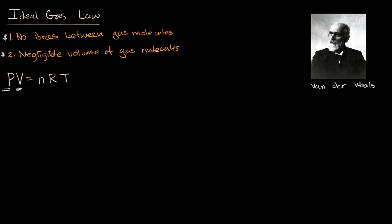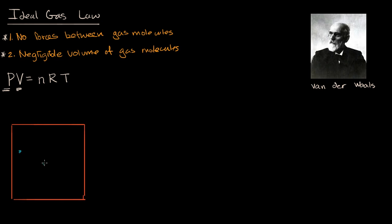To understand the logic of the van der Waals equation, let's think about how we might want to modify P, and then how we would want to modify V. Let's give ourselves a container and put some gas molecules in it. Pressure is force per unit area, and the pressure here comes from the collisions of gas molecules bouncing off the walls of the container — every time they do that, they exert a little bit of force on that area.